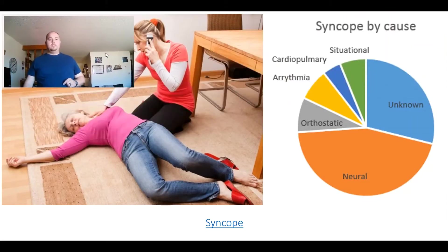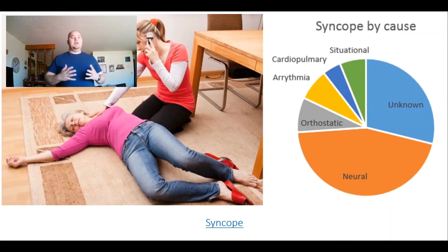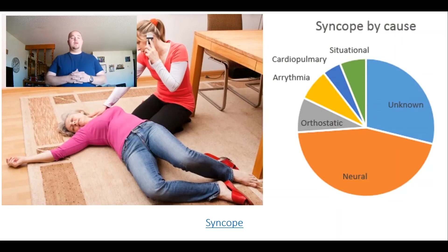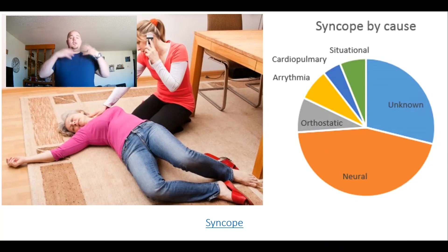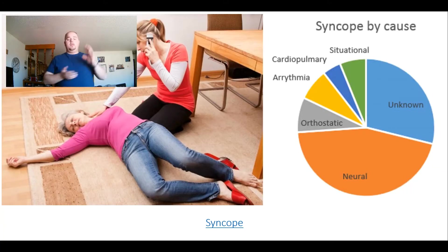Our syncopal episodes have different causes, but syncope is basically passing out. Why do they pass out? We have a graph of different causes of syncope: situational — they get so worked up and they pass out; unknown cause, which is a big chunk of the pie; neural — there's a problem with the brain; and orthostatic — their blood pressure changed when they stood up too quickly.